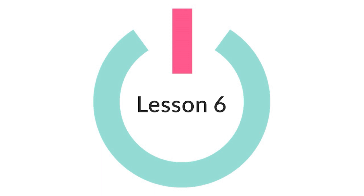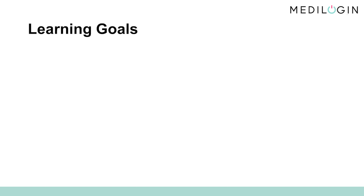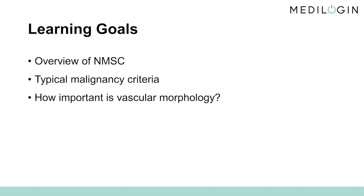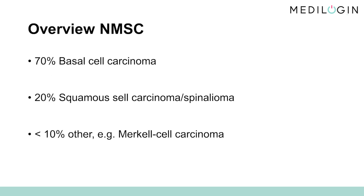Lesson 6: Non-melanoma skin cancer. In the last two lessons, we discussed melanocytic skin changes in detail. From this lesson onwards, we will focus on unpigmented malignant lesions, which are called non-melanoma skin cancer, or NMSC for short. We will explain which tumors fall under this definition, which typical malignancy criteria exist, and address in particular the morphology of vessels and their development. The term NMSC covers both basal cell carcinoma and squamous cell carcinoma, and its precancerous form, actinic keratosis. NMSC can present in both pigmented and non-pigmented forms. In this lesson, we will discuss classic dermatoscopic characteristics of NMSCs.